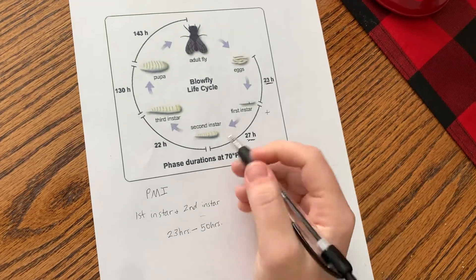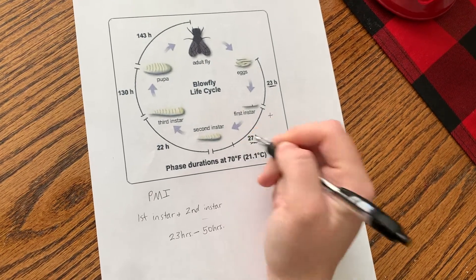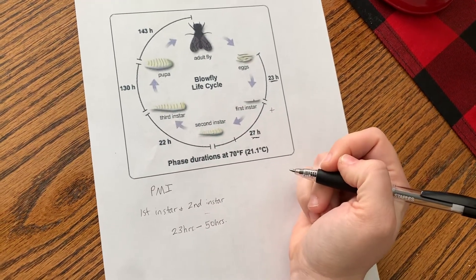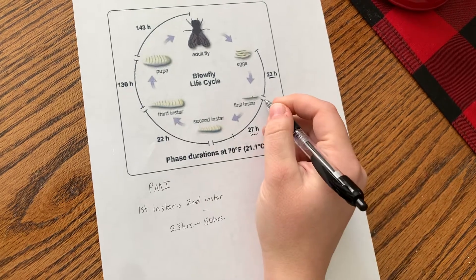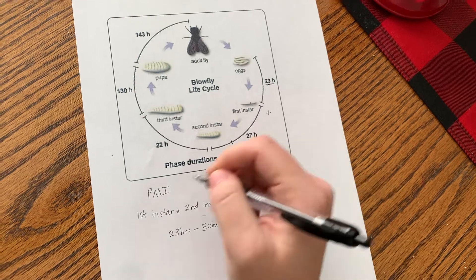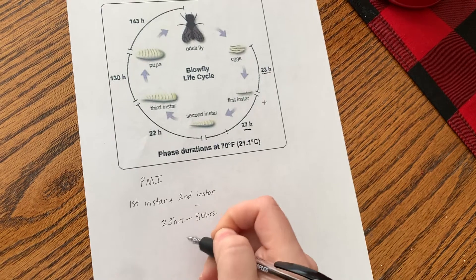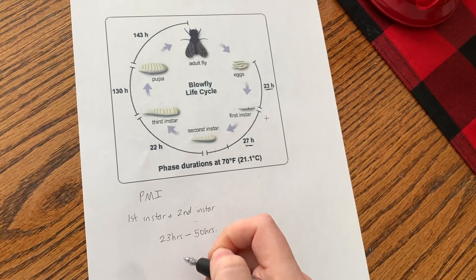Now if you were an investigator and you found some second instar, you can pretty much guess that we're going to be more along this area of development because it's not likely that right at 23 hours we already have second instar larvae. But because this is an interval, post-mortem interval, we're going to go ahead and give an interval of time or a window of time.